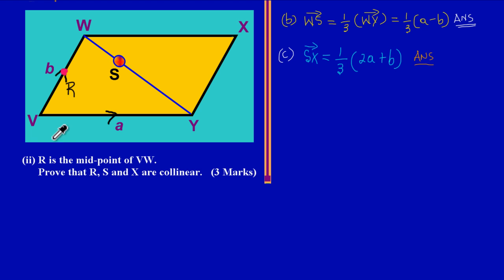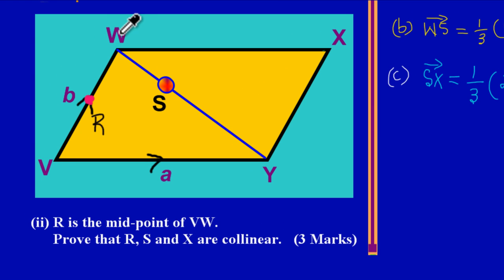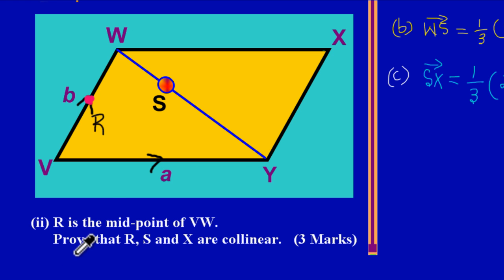They have given us a statement that R is the midpoint of VW. We established in the previous video that this length was V to W. Since R is a midpoint, I have divided the length VW into two equal parts, colored in red, and placed R there to suggest that this point is halfway between V and W.